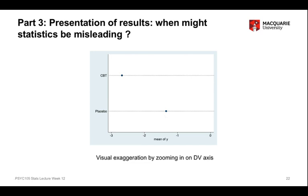What the researcher has done here is to present the results in a way which zooms in on the data. One argument is that this makes efficient use of the graph space available. The downside is that it appears to exaggerate the apparent difference between these two mean reductions in Hamilton score, because if we look at the actual numbers, the difference in reductions in absolute terms is minus 1.3, but the standard deviation is 11.2, giving a Cohen's D of 0.12, which is well down into the small effect size range — even though visually it looks like there is a clear and substantial difference between the two groups.